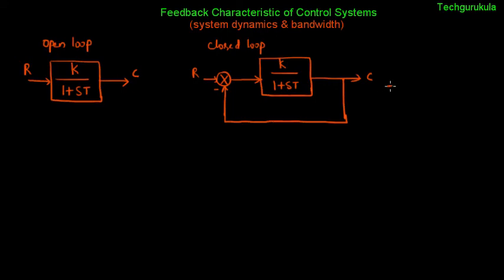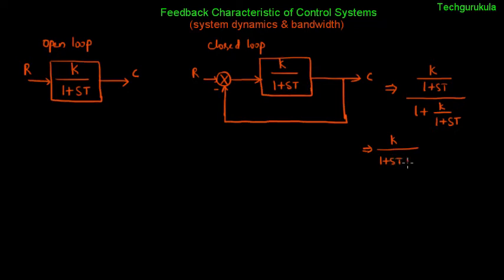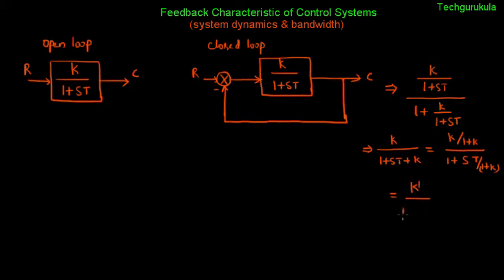Now let us find the transfer function of this closed loop system, which is [k/(1+sT)] divided by [1 + k/(1+sT)]. Rewriting, we get k over (1 + sT + k). Taking (1+k) as a common factor, this becomes k prime over (1 + s·T prime), where k prime = k/(1+k) and T prime = T/(1+k).